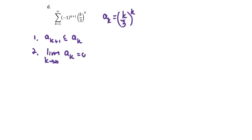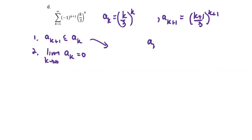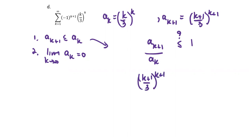By checking the term ak plus 1, which is in the form of k plus 1 divided by 3 raised to the power k plus 1. As we compare the ak plus 1 term and ak, another way to use it is: if we can prove that ak plus 1 divided by ak is less than or equal to 1, then to show ak plus 1 over 3 to the power k plus 1, multiplied by the reciprocal of ak, which is 3 to the k over k.